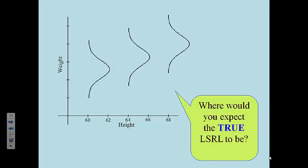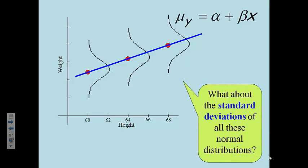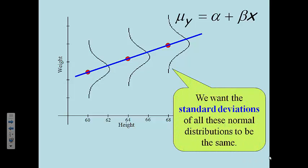Now, if we wanted to build the true least squares regression line to map this scenario, we could take the mean of each distribution—the mean of the 60 inch, the mean of the 64 inch, the mean of the 68 inch, those are what the red dots are—and we could draw our line going right through there. The formula for that line is mu sub y, the mean of the y's, equals alpha, which is the y-intercept, the true y-intercept, plus beta, which is the true slope, times x.